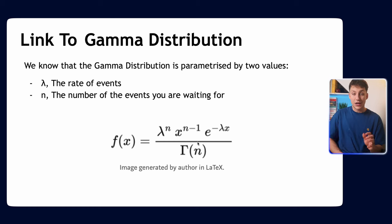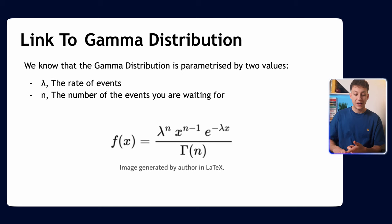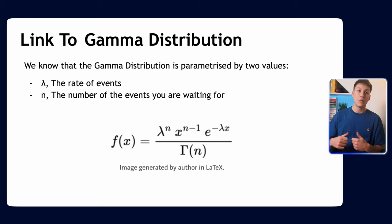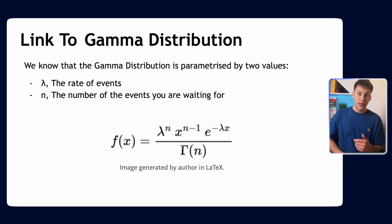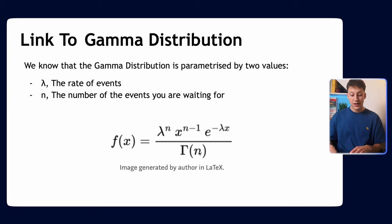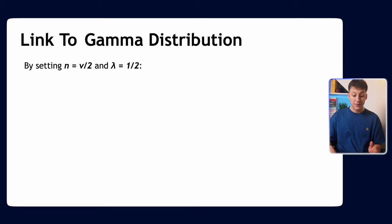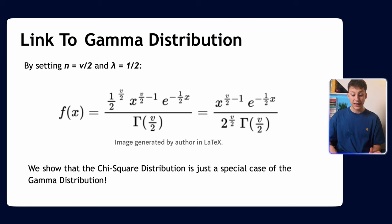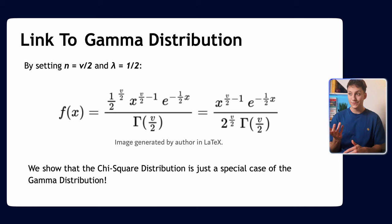The gamma distribution is parameterized by two things: lambda, the rate of events (which links to the Poisson distribution), and n, the number of events we expect. The gamma distribution also has the gamma value in its denominator, which is why it's called the gamma distribution. This looks very similar to the chi-squared formula. By setting n equal to v over two and lambda equal to one half, we can show that the chi-squared distribution is just a special case of the gamma distribution.